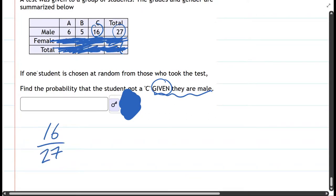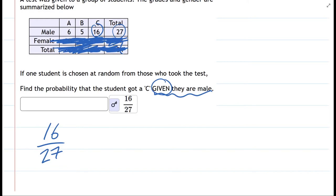And that is our probability right there. So again, you're going to look at the given, and that's all you're going to consider. You can cross out anything that's not given.